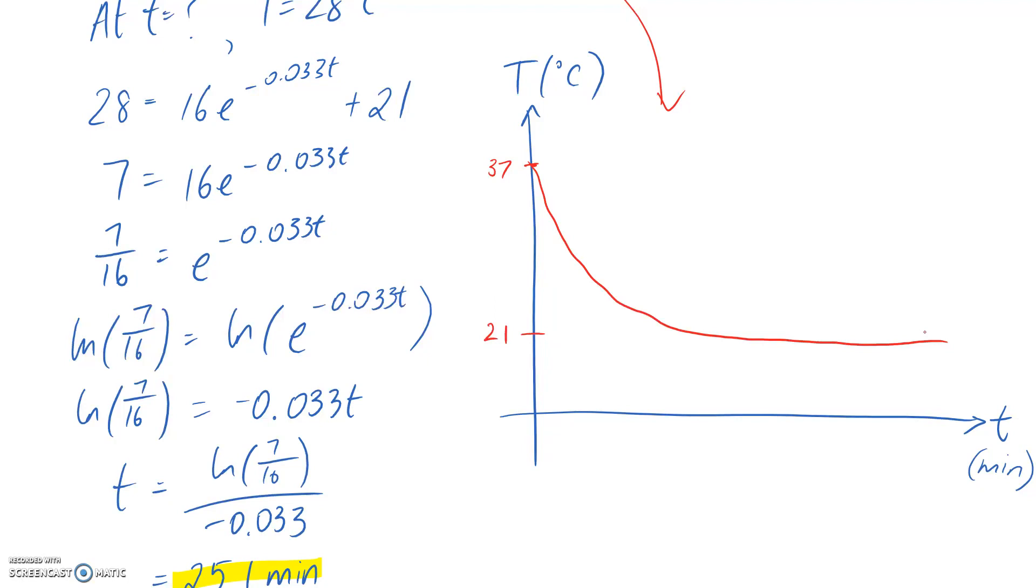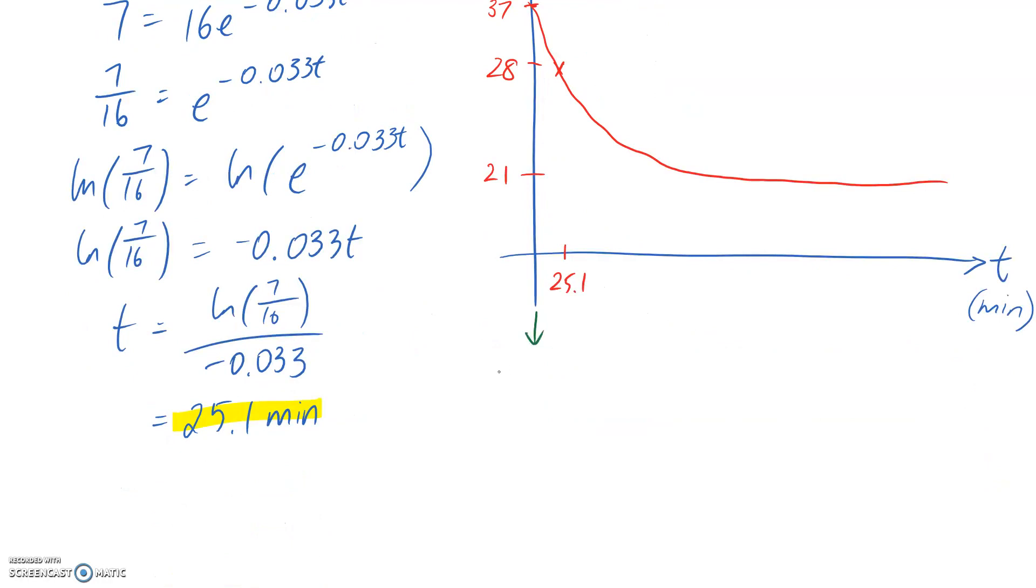Finally, the other point that we're interested in was the time of discovery, which was when the body had reached 28 degrees. So that would correspond to this point on the graph, which should be at a time of the 25.1. So this point is the time of death, and this point here is the time of discovery.